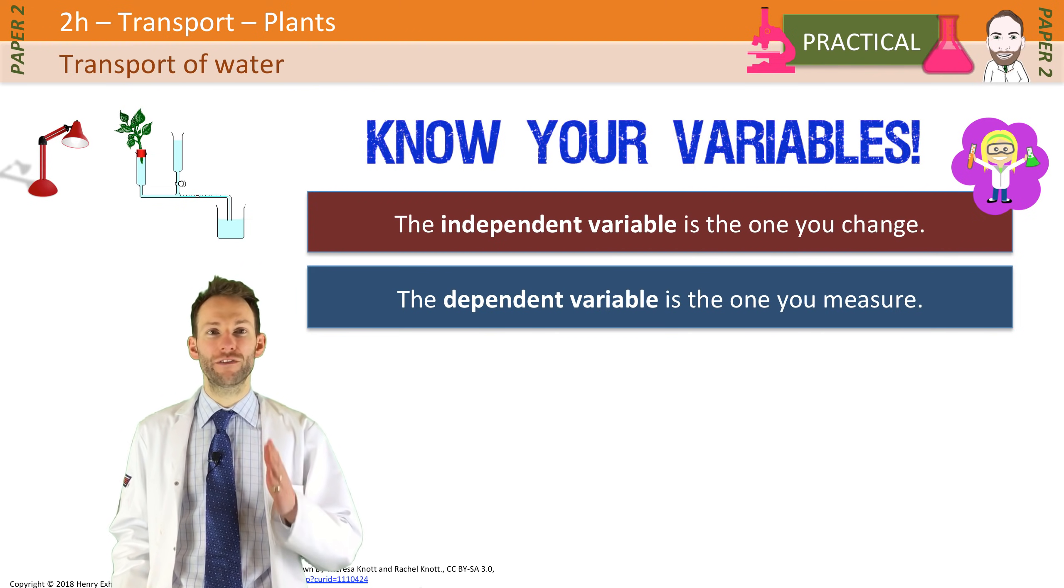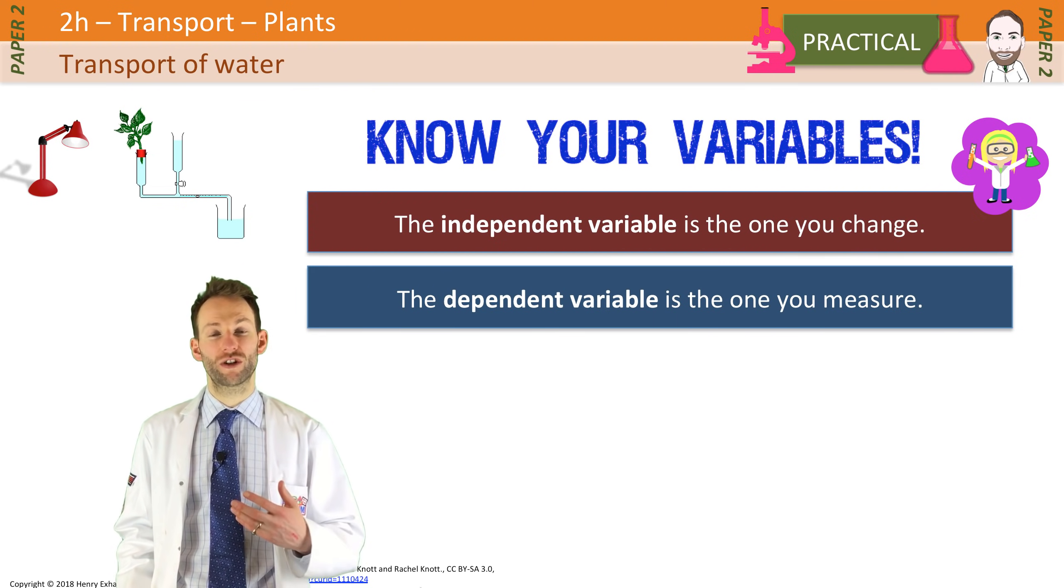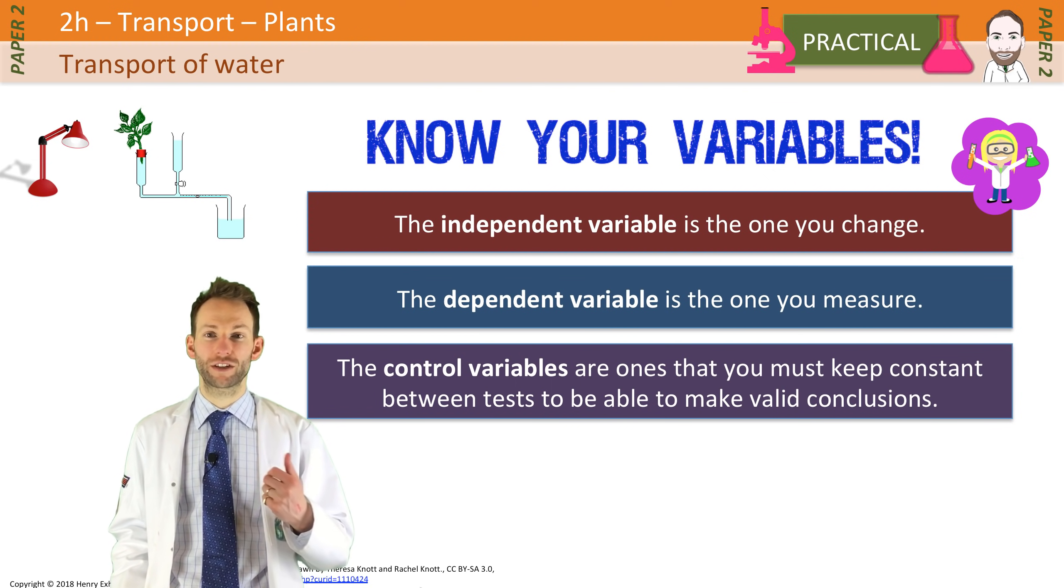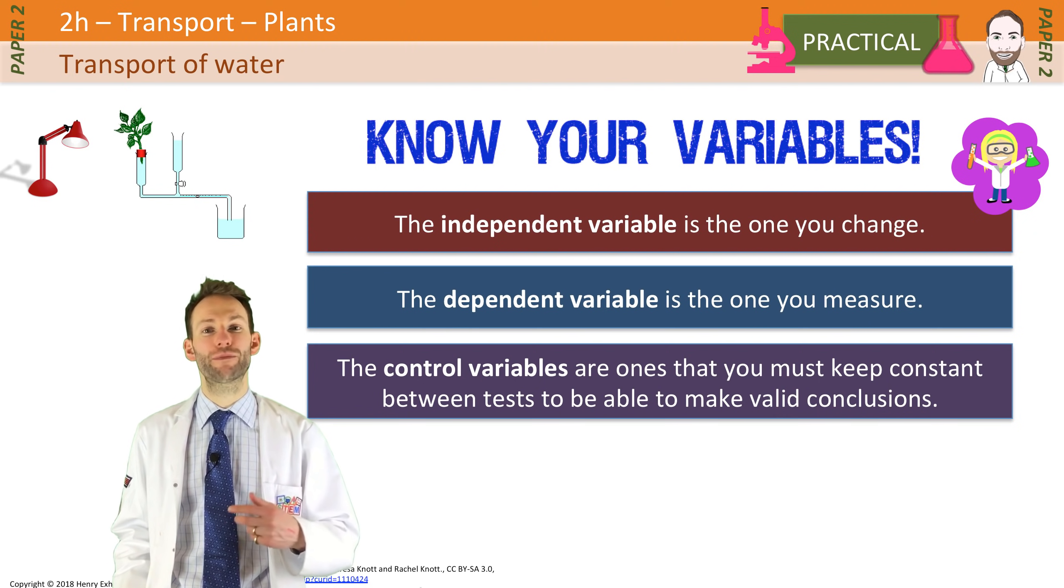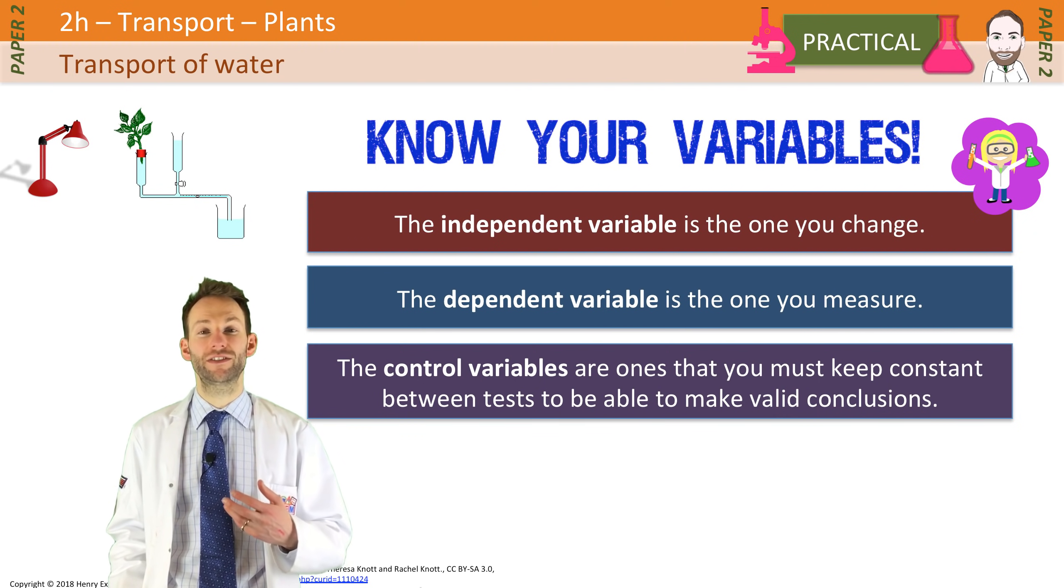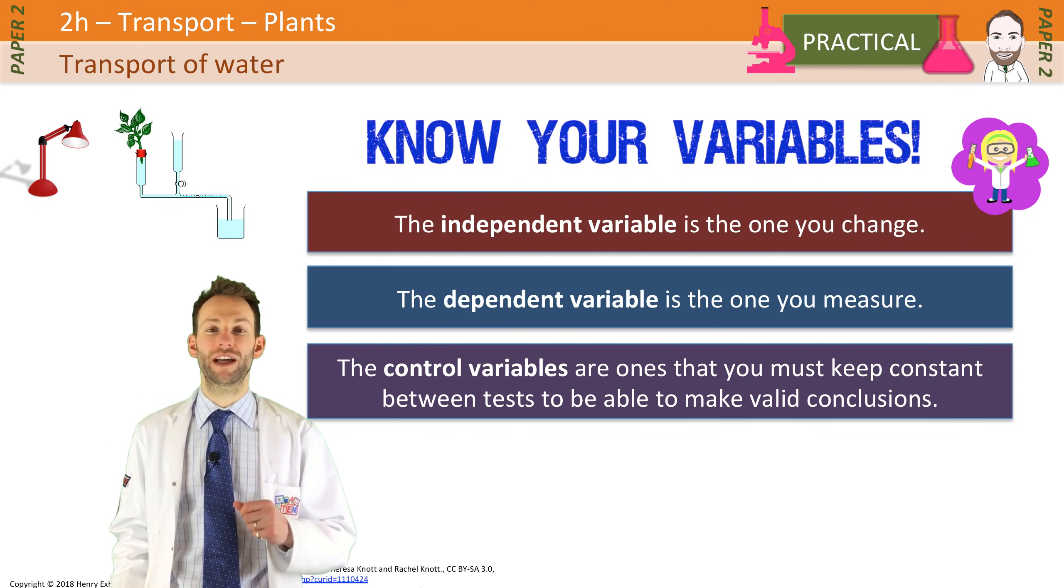Now, every other variable in your experiment needs to be controlled. They need to be control variables. Otherwise, your results aren't valid. So you need to make sure that anything else that could affect the rate of transpiration here is kept constant. That could be the humidity, or the wind speed, or the temperature, or the type of the plant, or the surface area of the leaves. All those things need to be kept as constant as possible throughout the experiment.